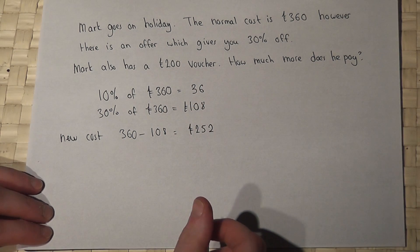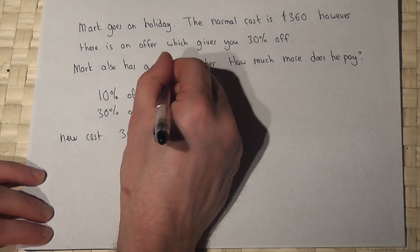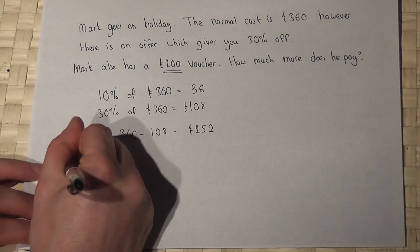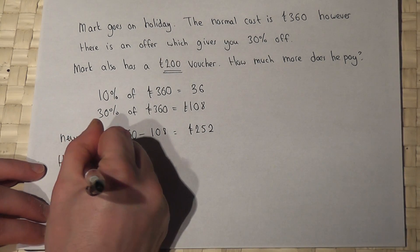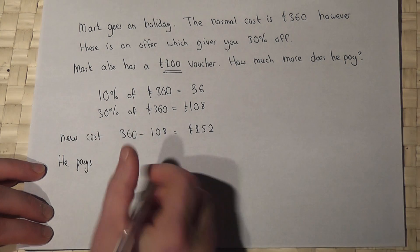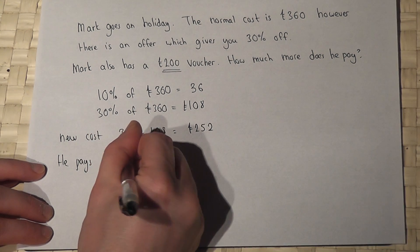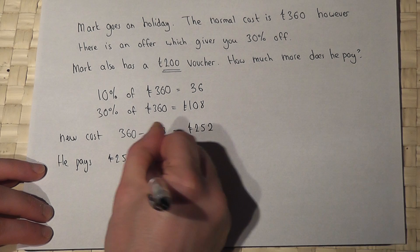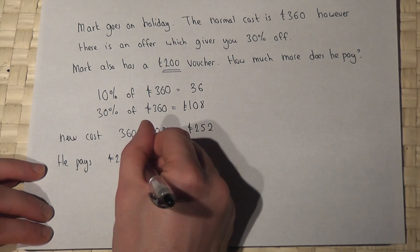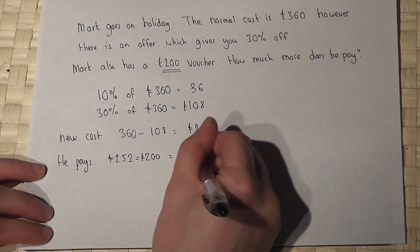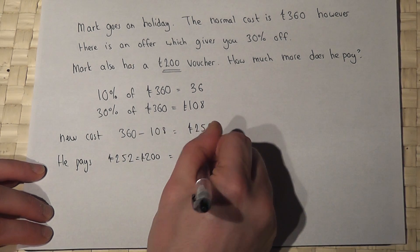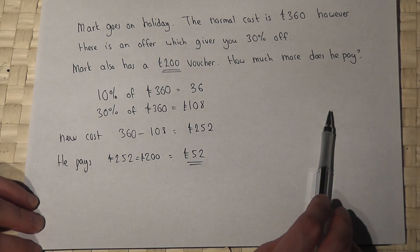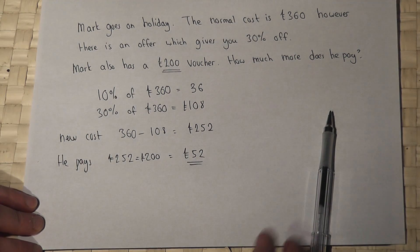Now Mark has got a £200 voucher. So therefore he pays £252 take away £200. He just has to pay £52 on top of the £200 voucher.